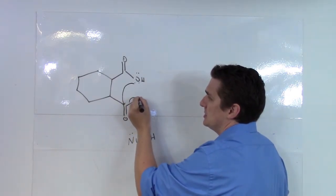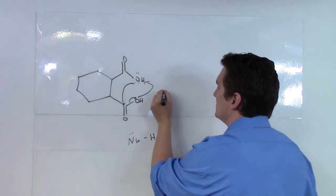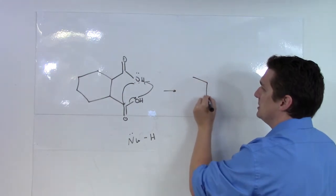So what can happen is that these lone pairs will attack this oxygen and we end up breaking off the OH and this deprotonates the hydrogen and what we end up generating here is a 5-membered ring.